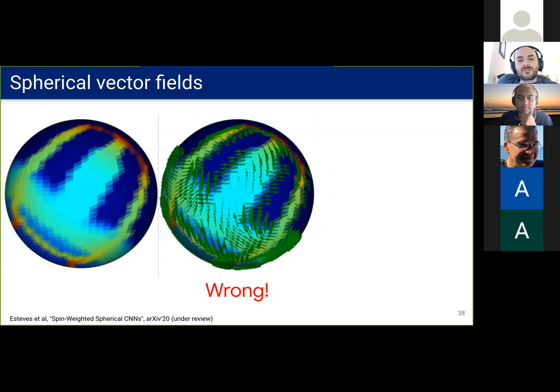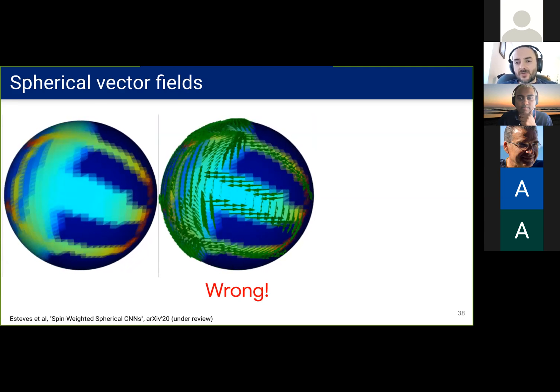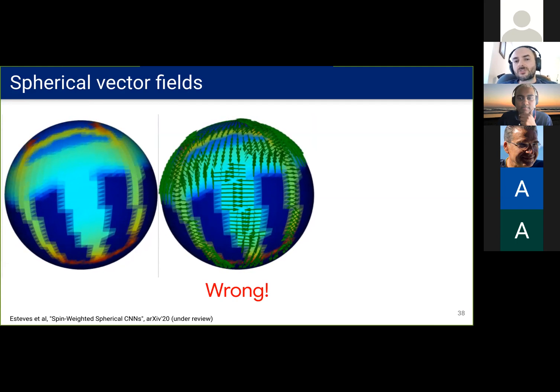Now imagine we have a vector field on the sphere. We cannot treat it the same way as a scalar field, because the vector should also follow the rotation of the base space.